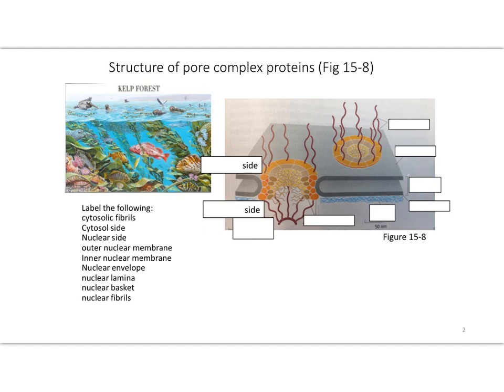Sometimes the nuclear pore is considered a kelp forest, which is why there's this picture here. In particular, the kelp forest portion is this meshwork of a variety of different proteins — these are nuclear fibrils — and they're going to prevent the movement of large molecules into the nucleus. However, they do allow small water-soluble molecules to move through. These proteins tend to have a large amount of unstructured regions, so the polypeptides are sort of disorganized or disordered — a flashback to when we talked about unstructured regions at the very beginning of the course.